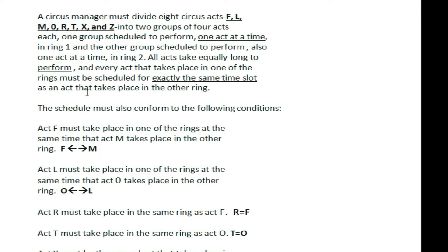So how do we perform? Ring 1 and ring 2 each have 4 acts performing 4-4. Ring 1 has a time to start each act, and ring 2 also has a time to start each act.